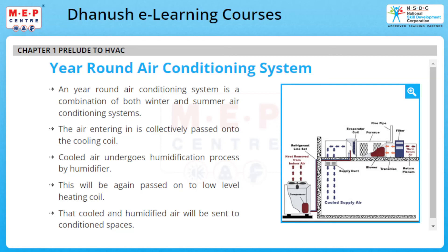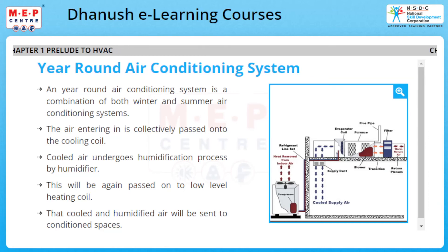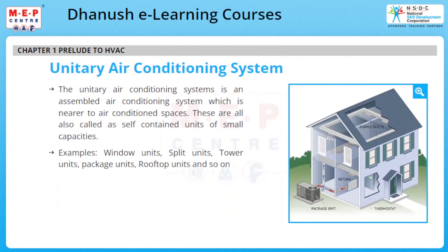The unitary air conditioning system is an assembled air conditioning system placed nearer to the air conditioned spaces. These are also called self-contained units of small capacities. Examples include window units, split units, tower units, package units, rooftop units, etc.